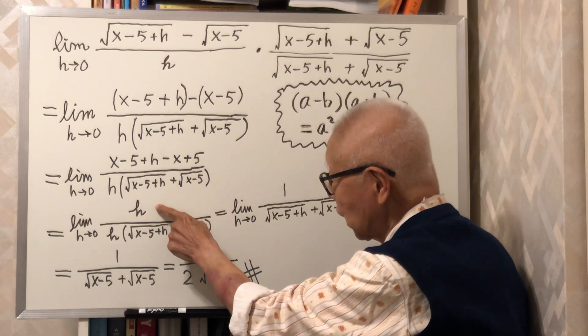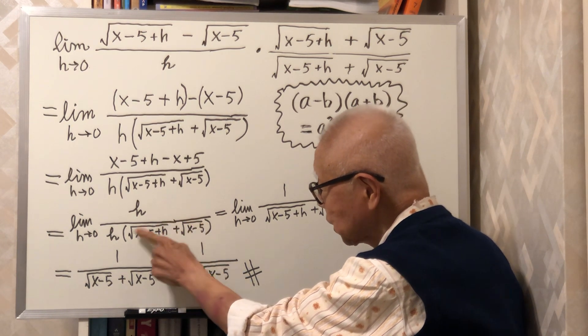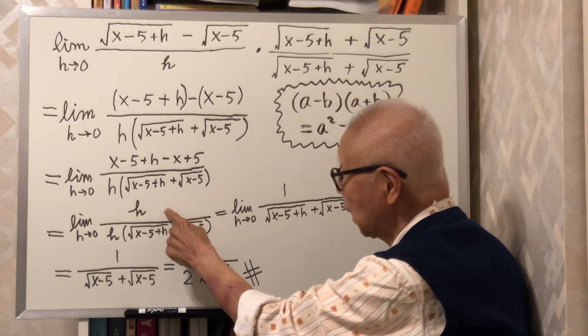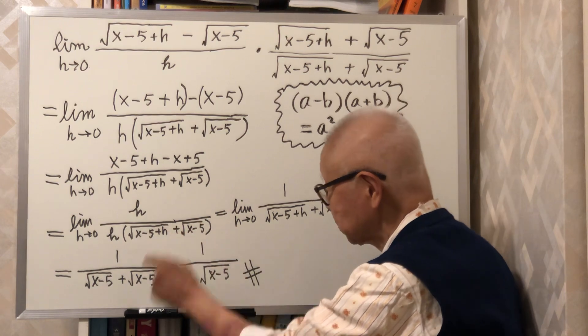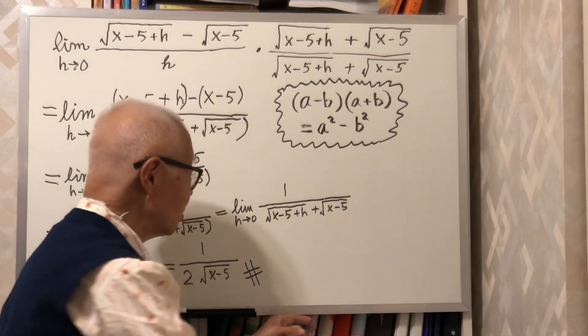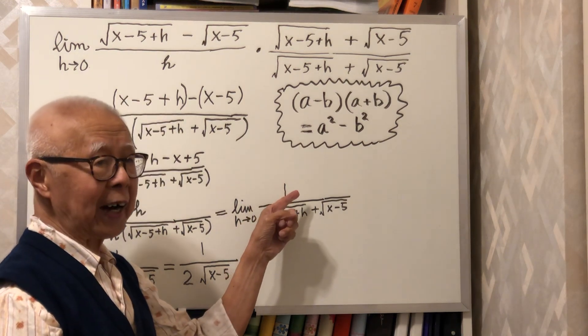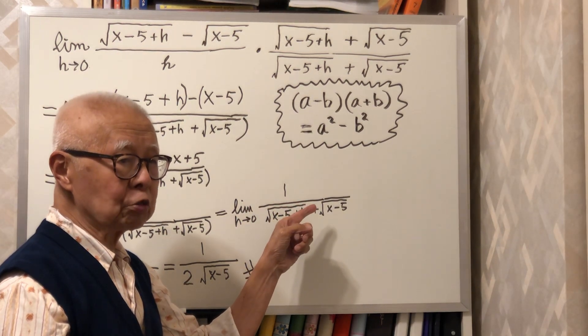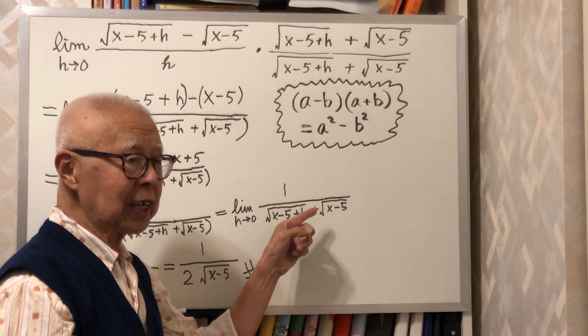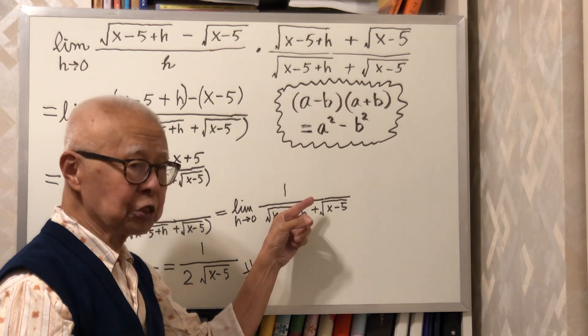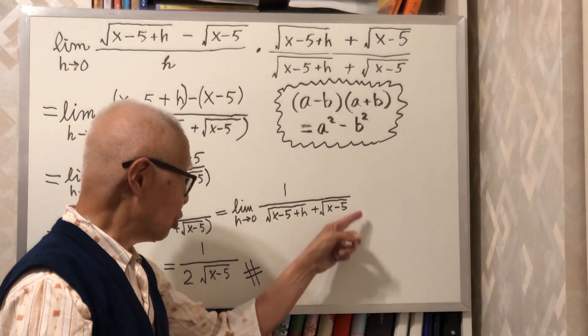And then this h cancels the h in the denominator. So I only have 1 divided by that. This is what I have after multiplication of the two numerators, after simplification, and after canceling the h.